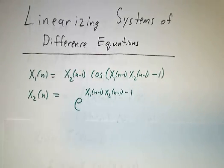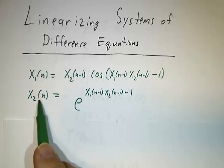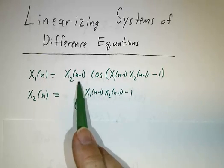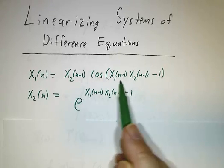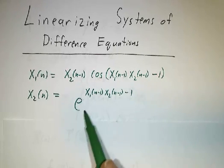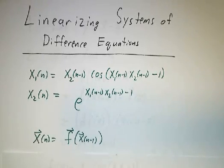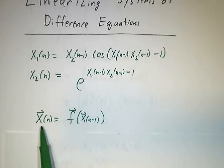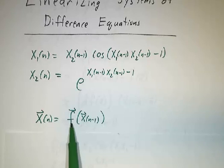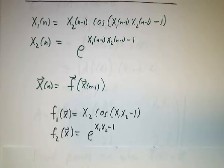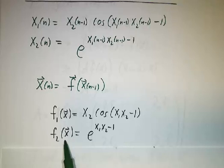Our example problem: we're going to get x1 and x2 today as functions of x1 and x2 yesterday, and they're non-linear. It's x2 cosine of (x1·x2 − 1), and e to the (x1·x2 − 1). In vector form, x today is f of x yesterday, where f1 is x2·cos(x1·x2 − 1) and f2 is e^(x1·x2 − 1).